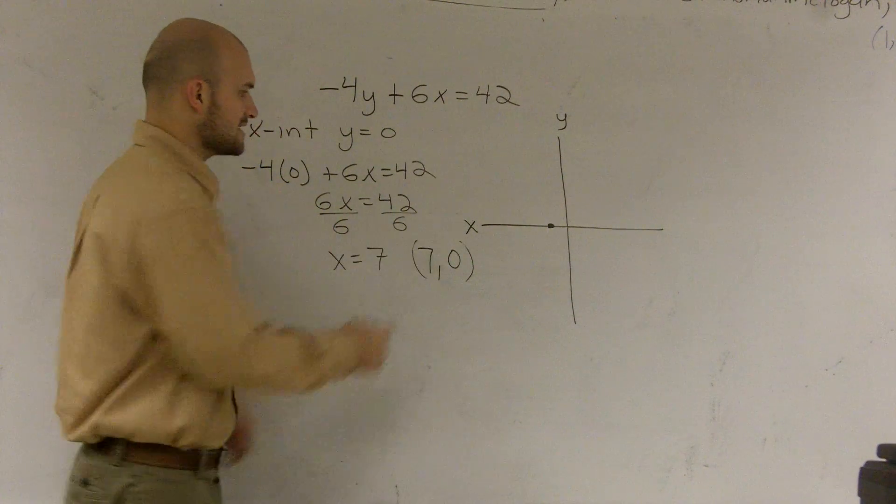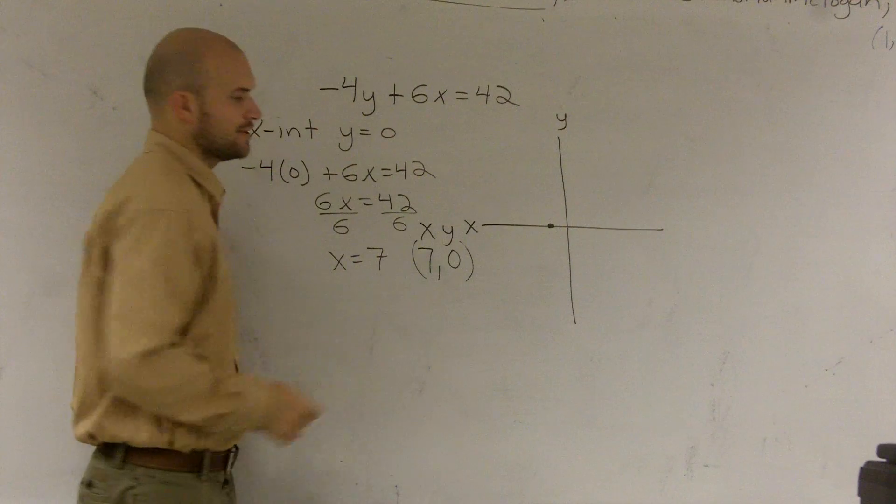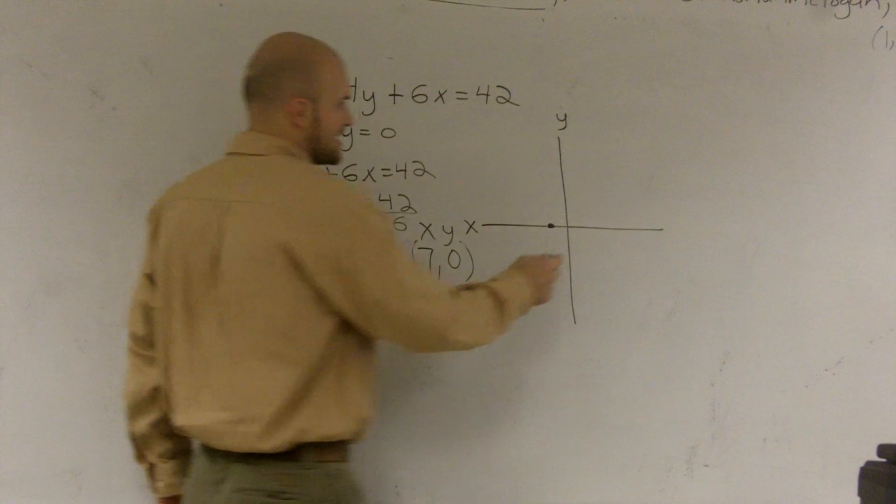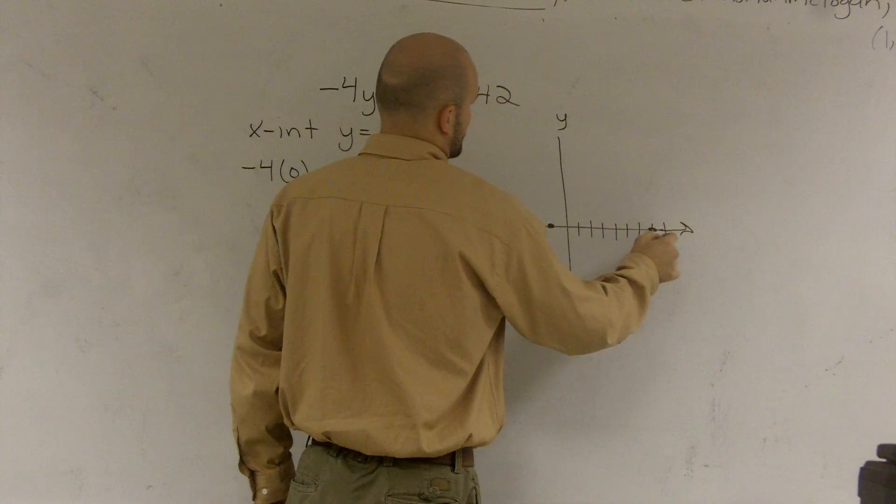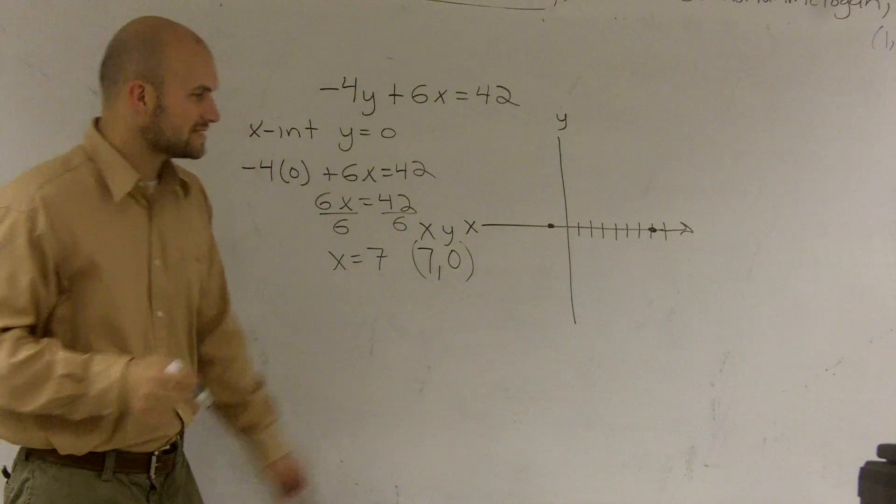Because remember, the x value is 7, and the y value is 0. So I go over to 7, 1, 2, 3, 4, 5, 6, 7. And I make a nice little dot there.